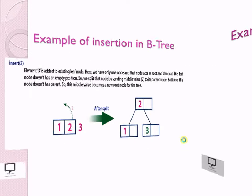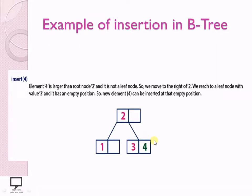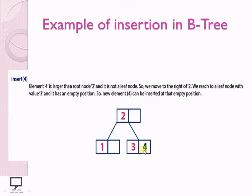For insertion of value 4: using BST logic, we find the correct node and check for a vacant position — yes, space is available, so 4 is inserted next to 3, maintaining ascending order at the leaf node. Every time we must check whether all B-Tree properties are satisfied; if not, it is not a valid B-Tree.